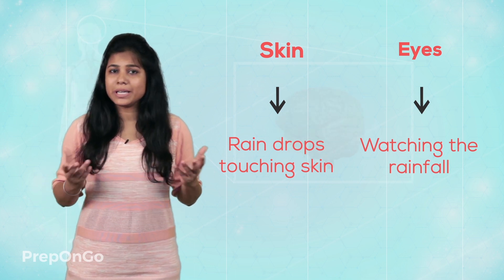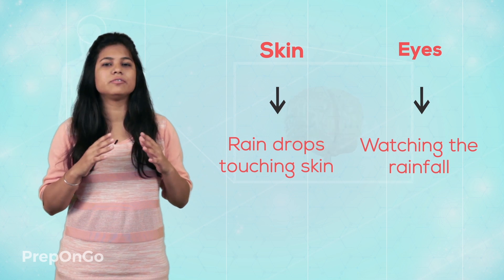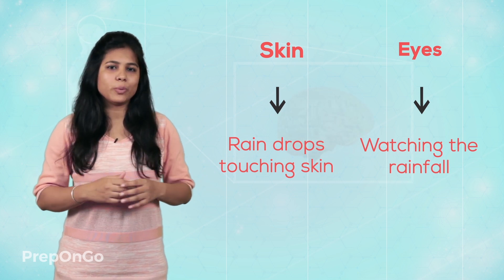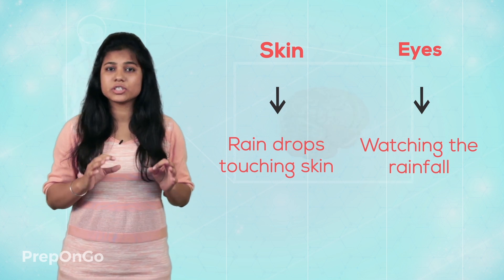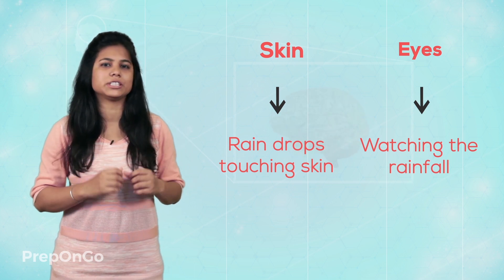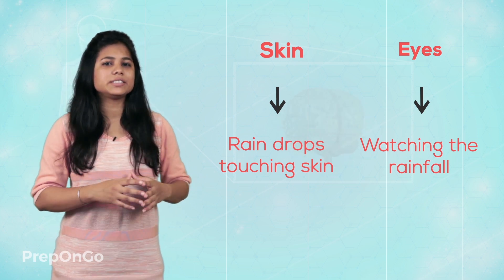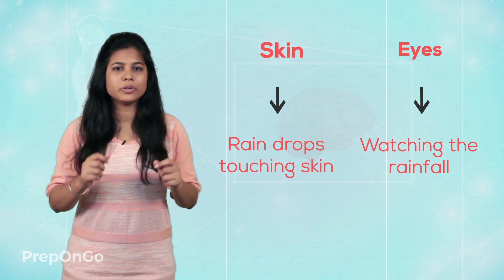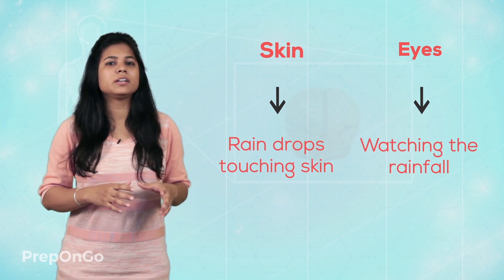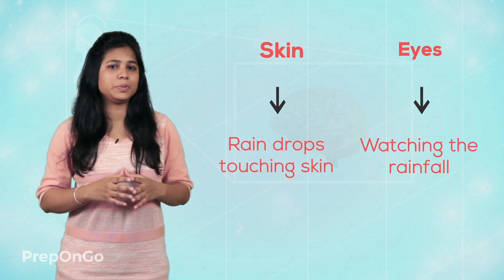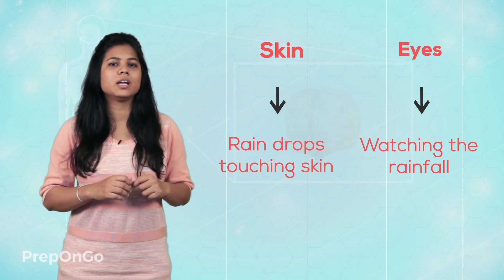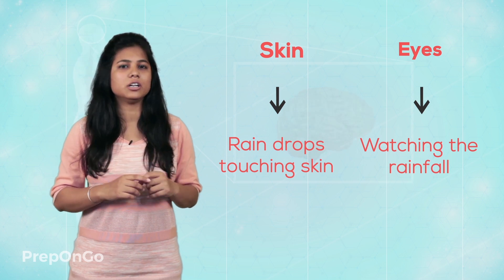The brain will make a decision by analyzing the information. The decision will be either finding shelter to protect ourselves or to get wet. The decision the brain makes is only based on previous experience. If in the past experience we have enjoyed the rain, we will get drenched. But if in the past experience we were ill because of getting wet, then we will find shelter to protect ourselves.